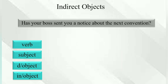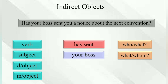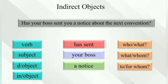'Has your boss sent you a notice about the next convention?' Has sent — who has sent? Your boss. Your boss has sent what? A notice. A notice for whom? For you. 'You' is the indirect object.